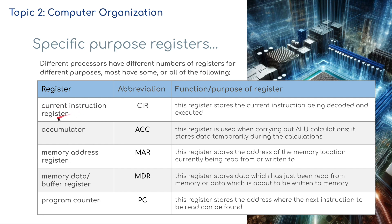We've got the CIR, the current instruction register — this register stores the current instruction being decoded and executed by the CPU. The accumulator (ACC) is used when carrying out ALU calculations; it stores data temporarily during the calculations. The memory address register (MAR) stores the address of the memory location currently being read from or written to. And the MDR, the memory data register or buffer register, stores data which has just been read from memory or data which is about to be written to memory.